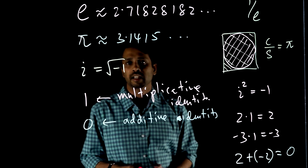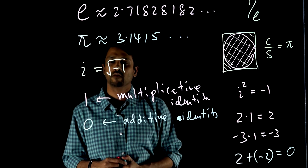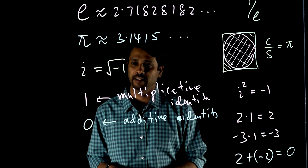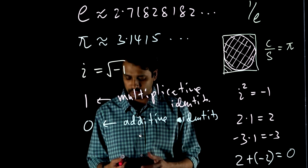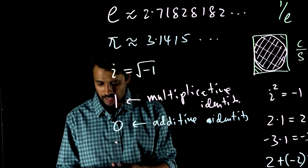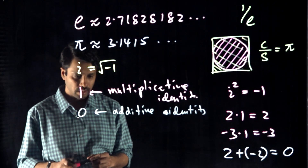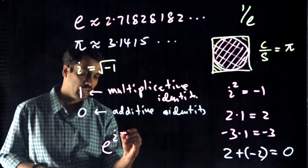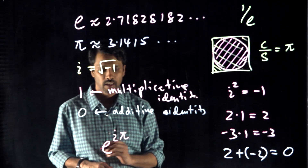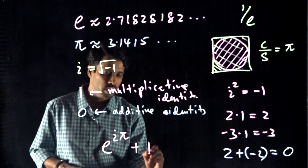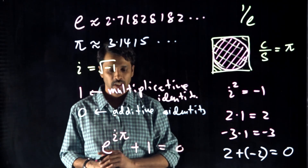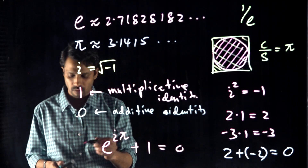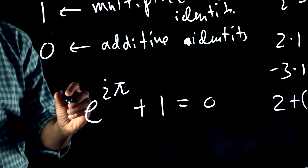Can we combine all of these into one equation? The answer is yes. We can combine all of them into one nice equation, and we can write it like this: e to the i pi plus 1 equals 0. So e, i, pi, plus 1 equals 0. And this is what we call the most beautiful equation in mathematics.